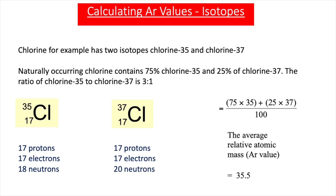For other elements, that's not the case. For example, for chlorine, 75% of the chlorine that exists is the 35 isotope, where there are 17 protons and 18 neutrons. And around 25% is the 37 isotope of chlorine, where there are 17 protons and 20 neutrons. So if we're going to work out the AR value for chlorine, we have to take this into account.